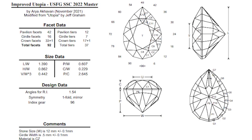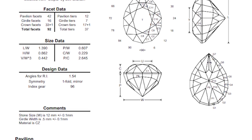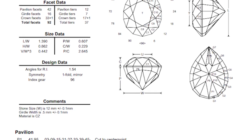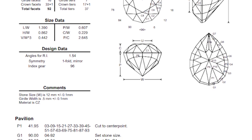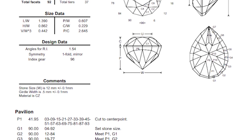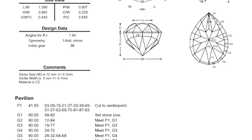I came across this design, Improved Utopia, in the United States Fasteners Guild website. It was selected for their annual gem cutting competition in 2022. It is not going to be an easy design to cut, which is why it was selected as the design at the master's level of their competition. This design was originally created by the late Jeff Graham, the Utopia design, and it was modified for this competition by Arya Akvarn.